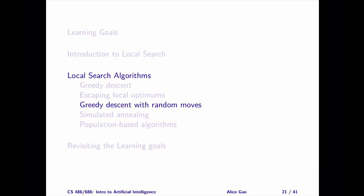That's everything on greedy descent with random moves. After watching this video, you should be able to: describe the two types of random moves; explain which random move is better suited for which type of search space; describe the greedy descent with random restarts algorithm and its properties — in particular, whether greedy descent with random restarts is complete. Thank you very much for watching. I will see you in the next video. Bye for now.